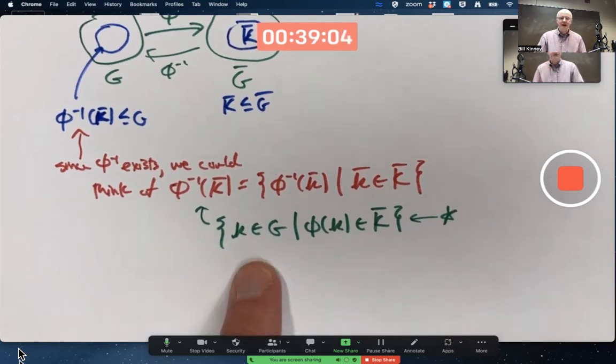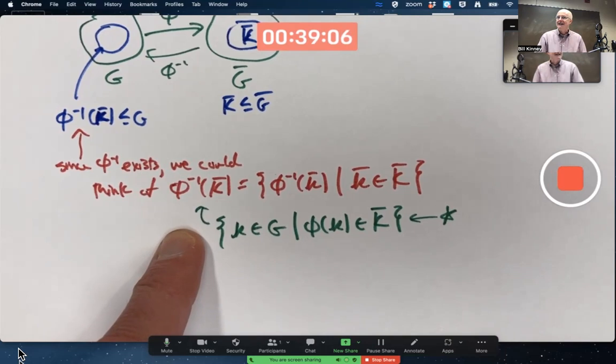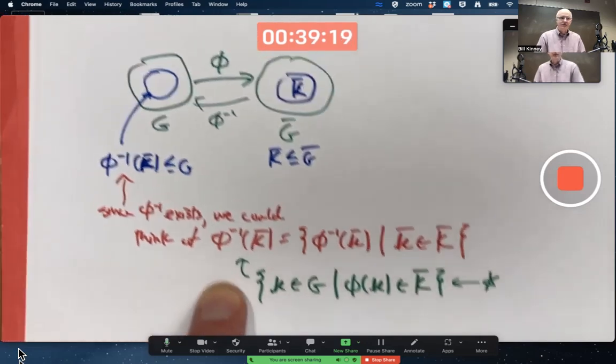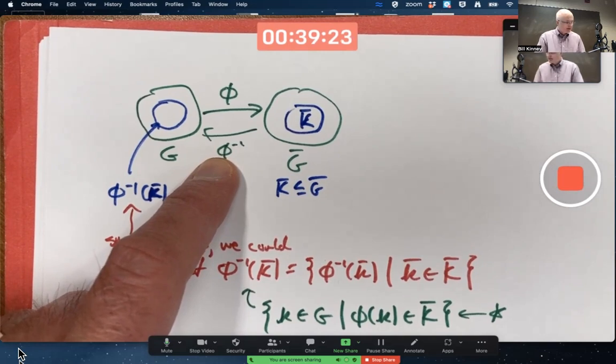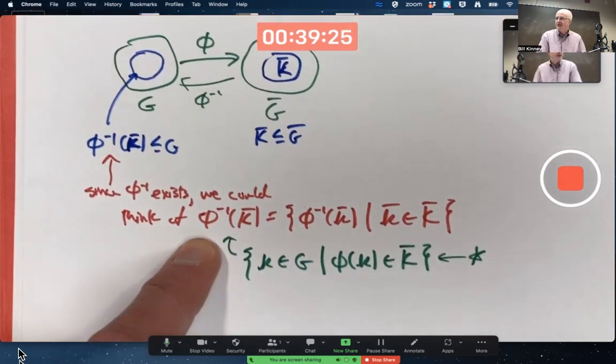But you can still define this set and it's still going to be a subgroup of G. So I'm about to give an argument for why it's a subgroup of G with the subgroup test. But this applies even when φ is not one-to-one or onto, even when φ inverse doesn't exist. But you still write it like this, notational, even when φ inverse doesn't exist.